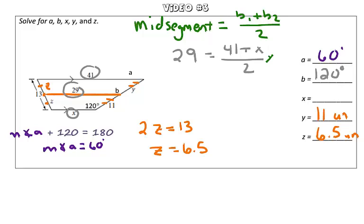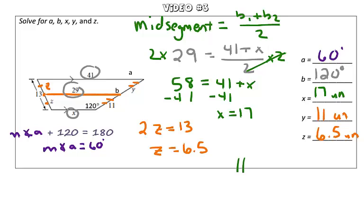To go ahead and solve this, we're going to use inverse operations. We're going to multiply both sides by 2. So we have 58 equals 41 plus X. And again, to get X by itself, we're going to use inverse operations one more time. Subtract 41 from both sides. X equals 17 units. Nice work!